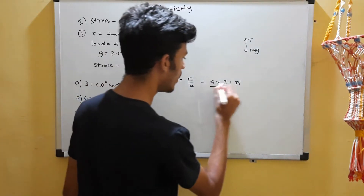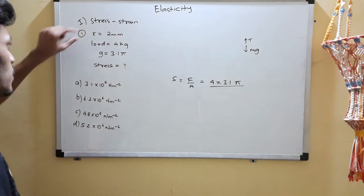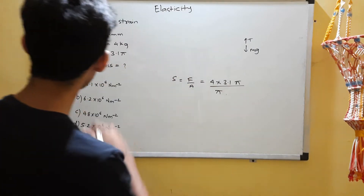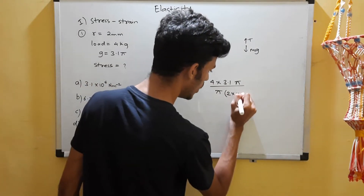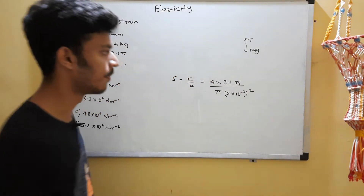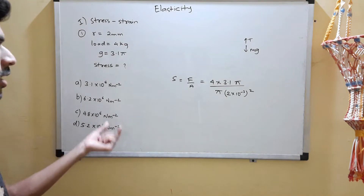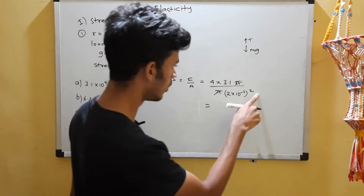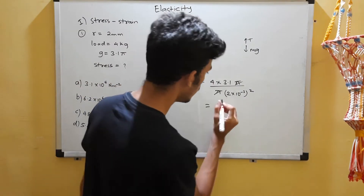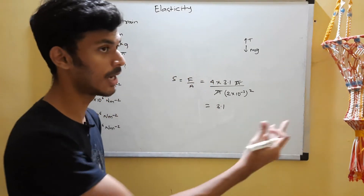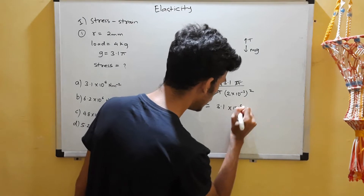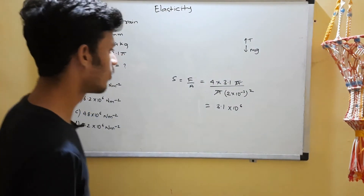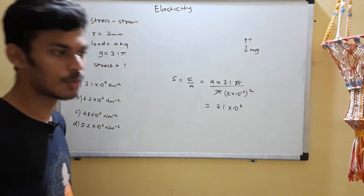Dividing by area, which is πr², where r is 2 mm = 2×10⁻³ m. So we have 4 × 3.1π divided by π × (2×10⁻³)². Pi cancels, 2² gives 4, and the 4s cancel, leaving 3.1 divided by 10⁻⁶, which equals 3.1×10⁶ N/m². So option A is the correct choice - a quick formula-based question.